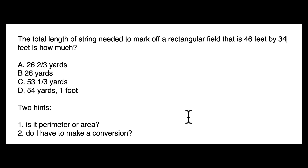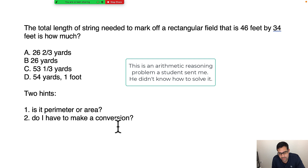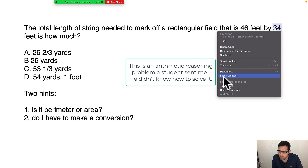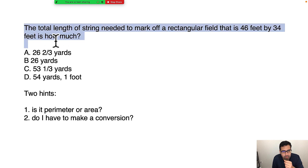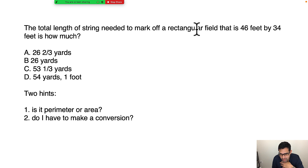I just wanted to share this with you guys — it's very important for you to try to do it. If you're watching this recorded, try to do it before you see the explanation. Before you do anything, I'm going to give you two hints. Hint one: think — is this problem perimeter or area? Whenever you have a rectangle, it's going to be either perimeter or area. Hint two: do I have to make any conversion?